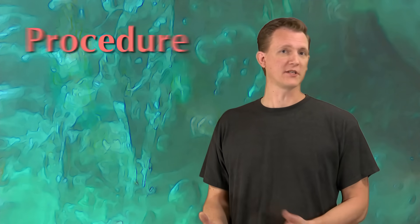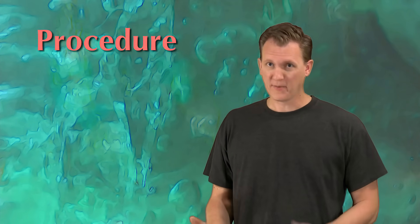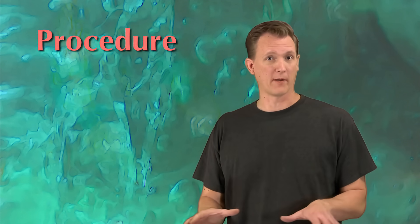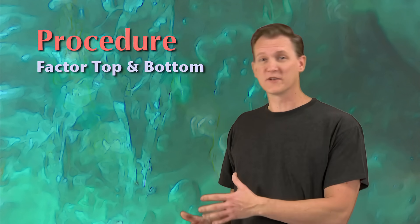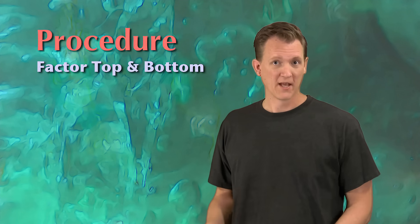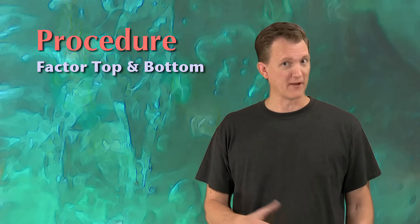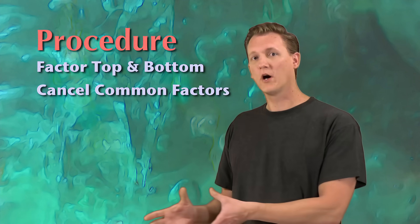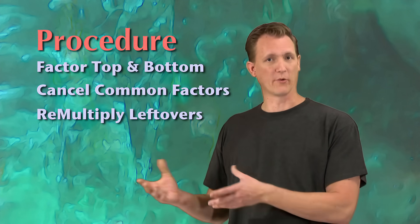Welcome to part two of simplifying fractions. In part one, we learned the procedure for simplifying fractions. Basically, you just take the top and bottom numbers and factor them down to their prime factors. And then you see if there's any factors that are the same on the top and bottom. We call those common factors. And if there are, you just cancel them out. And once you've canceled out all the common factors, you re-multiply whatever's left over to get your final answer. In this video, we're going to see a couple examples of how we can use that procedure to simplify fractions.